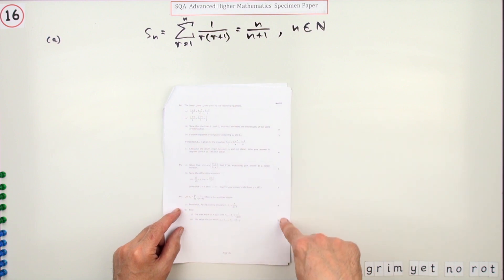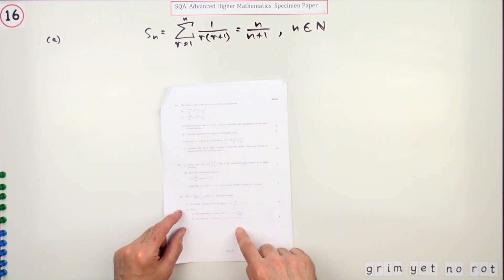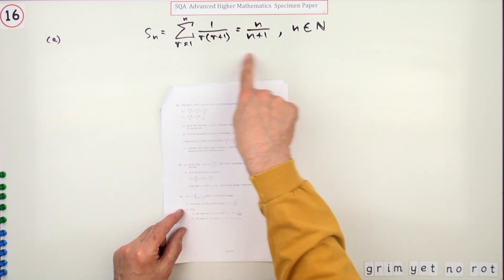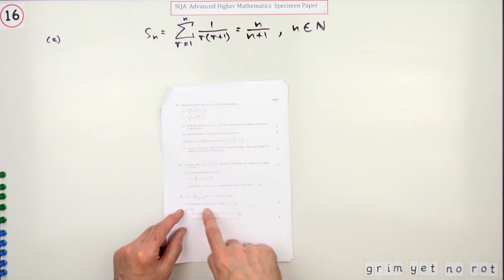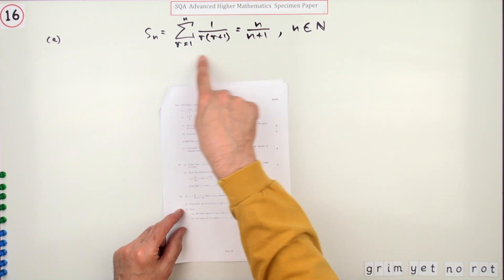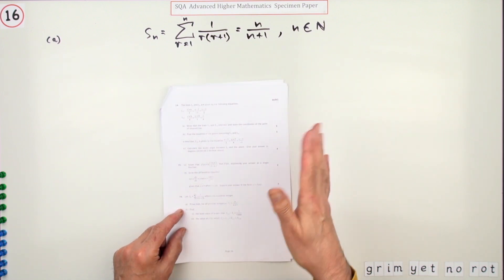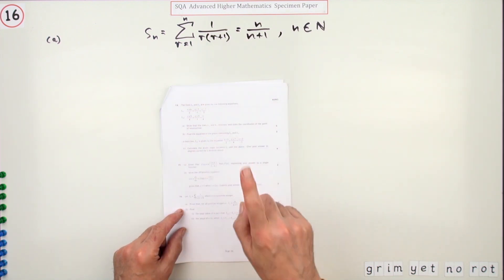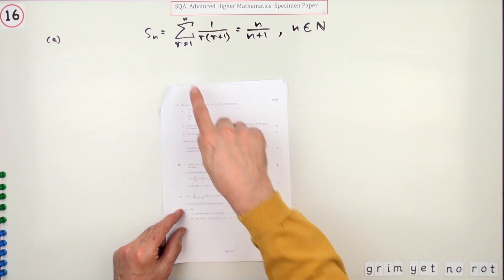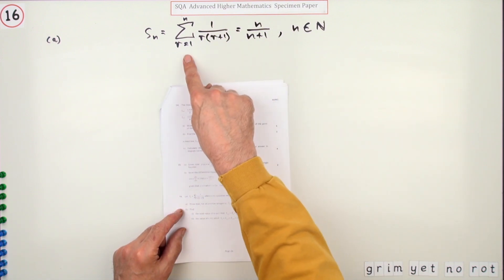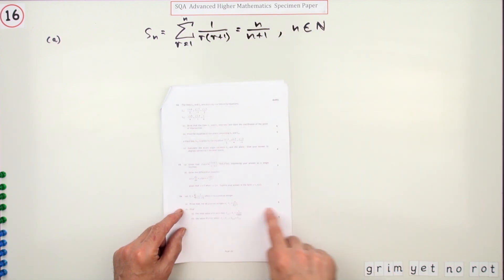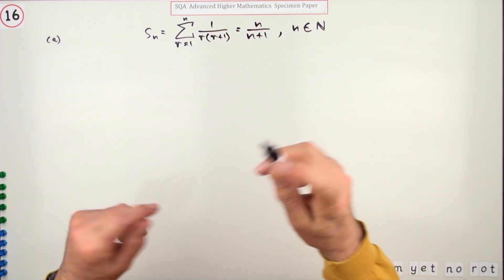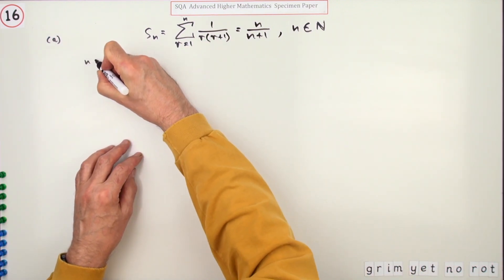Number 16, for 10 marks here in this specimen paper we've got a summation. In part A it simply says — even though it looks very much like a proof by induction — it just says prove that this is the case. It doesn't actually specify that you have to do it by induction. But as soon as you see a summation sign with the right number of marks — five marks — you would probably just launch into a proof by induction.